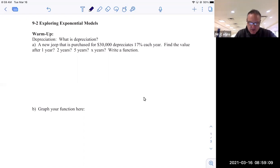That's what depreciation is. So a great example is when you buy a car, the minute you buy it, it starts depreciating in value. The value of the car goes down, especially after you put some wear or tear on the car. So imagine we purchased a new Jeep at $30,000 and it goes downhill by 17% a year.